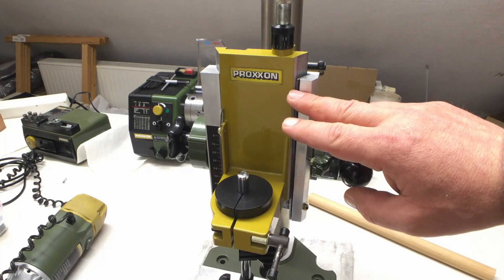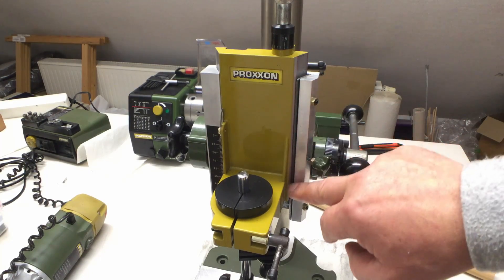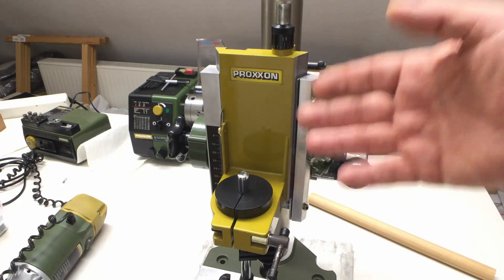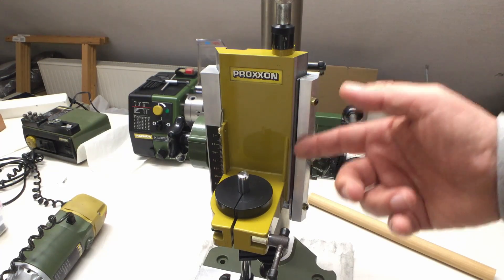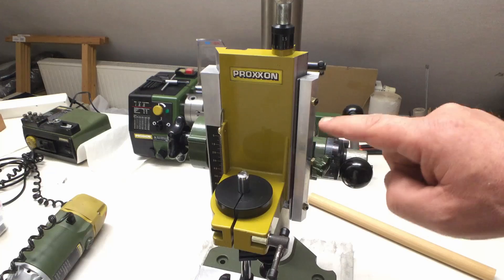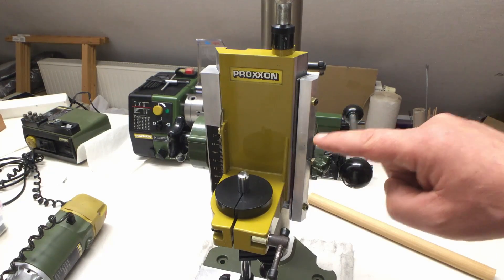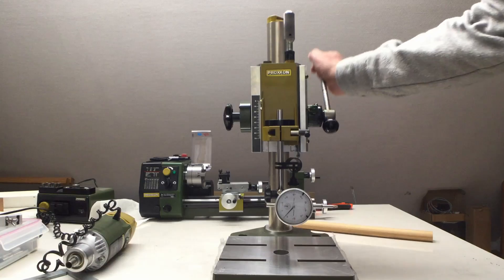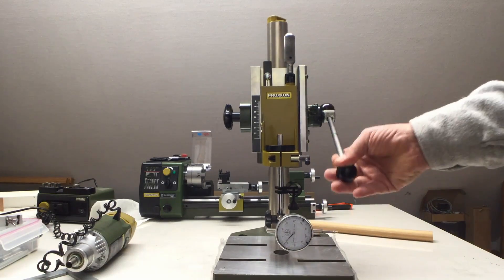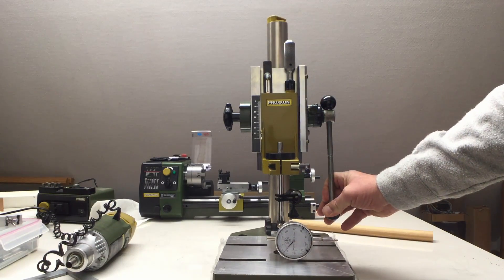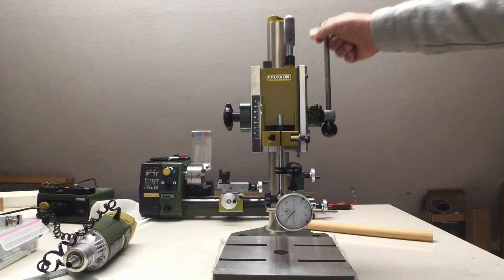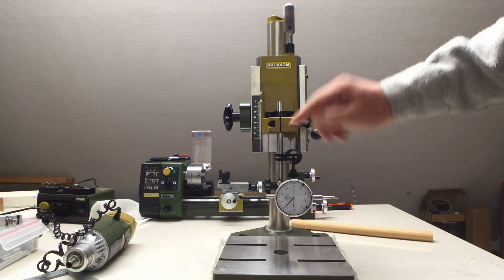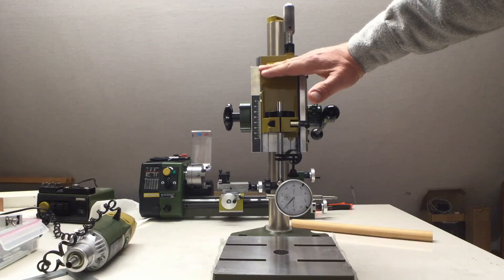The first order of the day is to adjust these ways here. I think I was a little bit lazy when I adjusted them the last time. But we will see. Before we start, I should make sure that I'm not running my dial gauge into the table when I go all the way down. So I might have to put the dial gauge a little bit higher up and also adjust the height of the head.